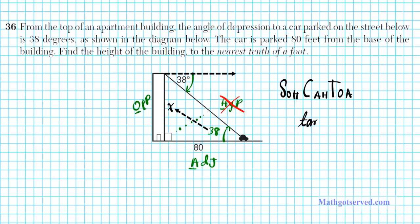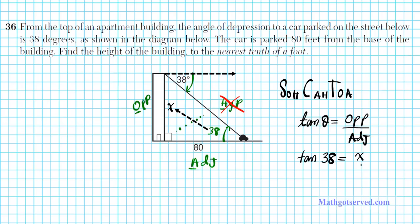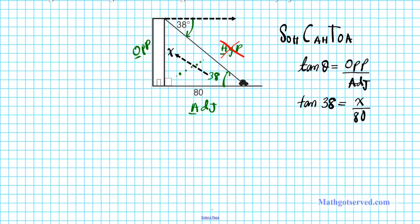Looking at SOH-CAH-TOA, the ratio that uses only opposite and adjacent is TOA — tangent. So tangent of theta equals opposite over adjacent. Applying this to our problem: tan(38°) = x divided by 80.